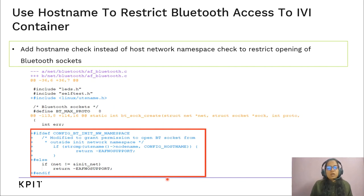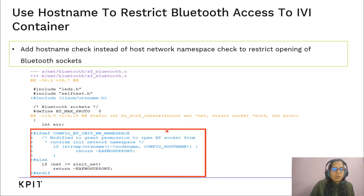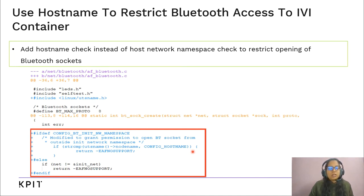One such approach is to use a hostname check instead of the network namespace check. A new kernel config option, CONFIG_HOST_NAME, can be set to the hostname of the container to which we want to restrict Bluetooth access. As shown in the kernel patch, we have bypassed the check for init network namespace. By setting CONFIG_HOST_NAME to the hostname of the IVI container, we can restrict Bluetooth access only to the IVI container.